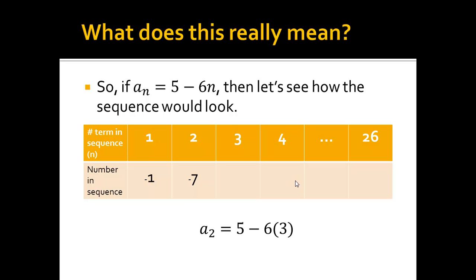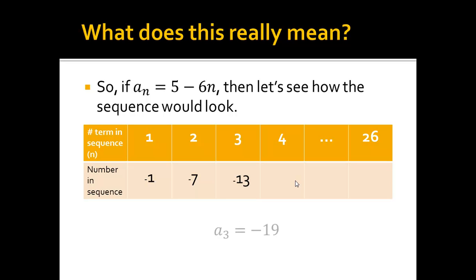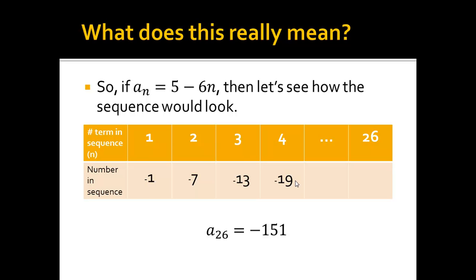We keep figuring out the next terms. 5 minus 6 times 3, which is 5 minus 18, is negative 13. You should start to see a pattern here, and it makes sense because this is a sequence — we should be coming up with something that has a specific pattern. 5 minus 6 times 4 is 5 minus 24, which is negative 19. And we already know the 26th term: 5 minus 6 times 26 is negative 151.